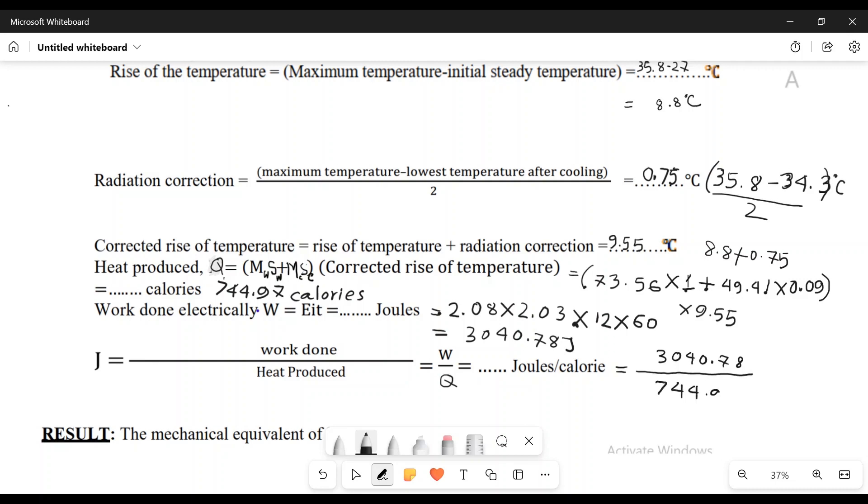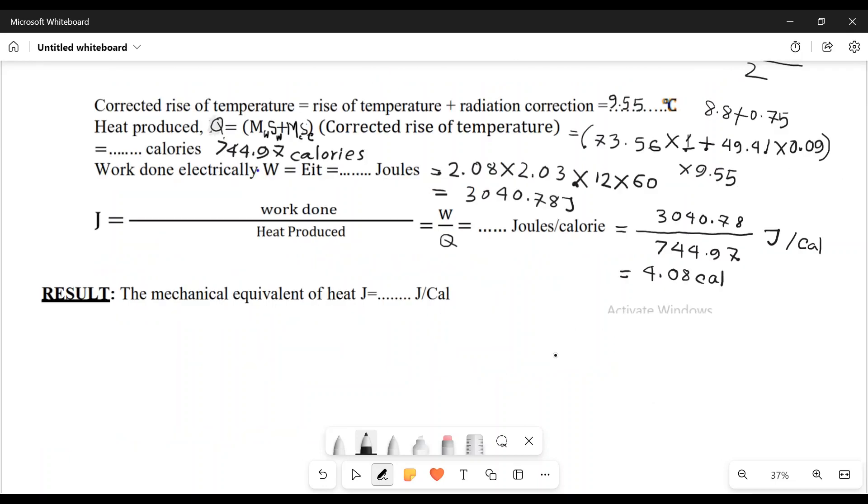The mechanical equivalent of heat is 3040.78 divided by 744.97, which equals 4.08 joules per calorie.